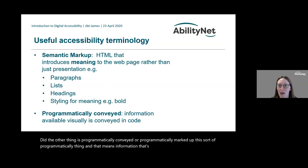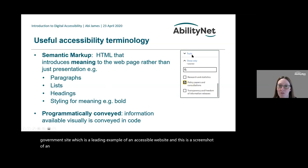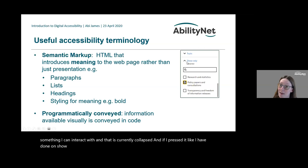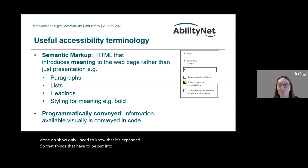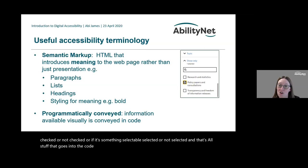Another term is 'programmatically conveyed' — information that's visible is also in the code. For example, on a collapsible accordion on the gov.uk website, a screen reader user needs to know that something is interactive and whether it's currently collapsed or expanded. A checkbox needs to communicate whether it's checked or unchecked. An icon-only button like a play button needs to have a name in the code — 'play' — and that name may need to change to 'pause' when playing. These are things hidden in the code that need to be perceived by assistive technology users.